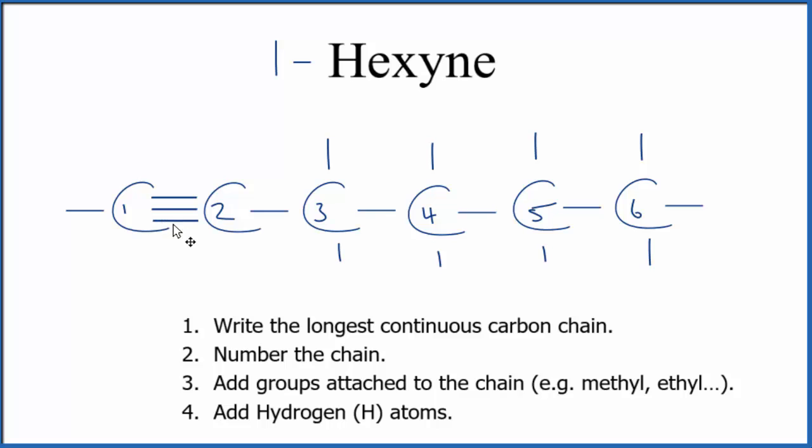We could also put the triple bond here on the second carbon, like this. So this carbon still has four bonds. This one has six, so we'll just move these over here. That'll give this carbon four bonds. This is the structure for 2-hexyne.